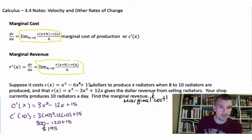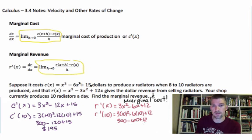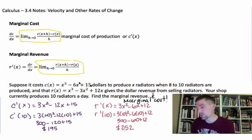Okay. Marginal revenue then is on the other side of that. We're just looking at the derivative of the revenue function, which is going to be 3x² - 6x + 12. And then I also want to do that when we're looking at 10 radiators a day. So 3 times 10² minus 6 times 10 plus 12, which is going to be 300 minus 60 plus 12. And on that one, I get $252 for marginal revenue.